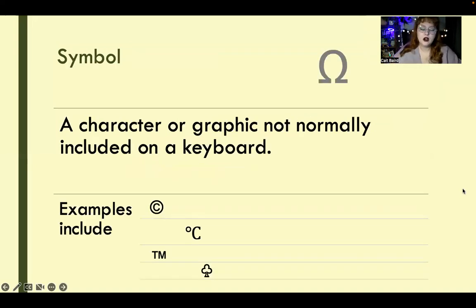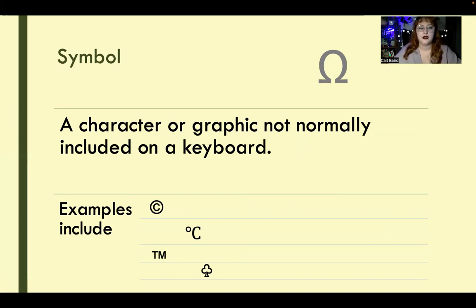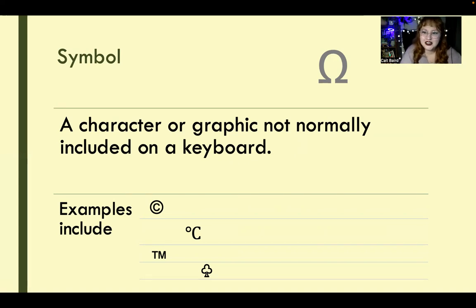Symbols are simply characters that are not on your keyboard. Special characters are similar but some have extra formatting elements attached. The symbol button looks like the omega sign and is located on the Insert tab. Examples of symbols include copyright, trademark, card suit symbols like a clover, degree symbol, and lots more. If it's not on the keyboard, it's probably in Symbol. You can get more symbols and special characters by changing the font within the symbol window.